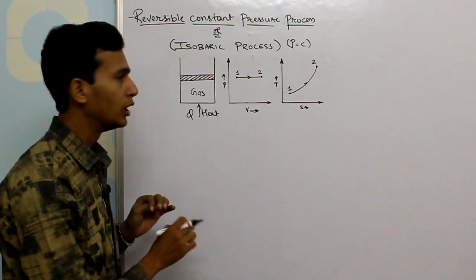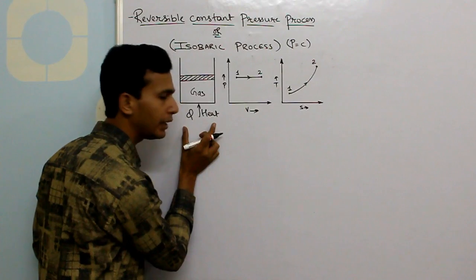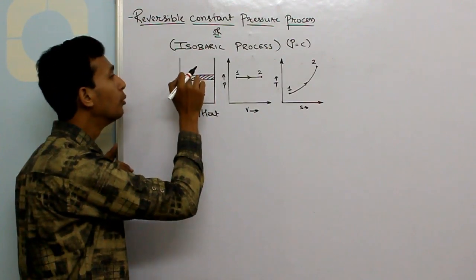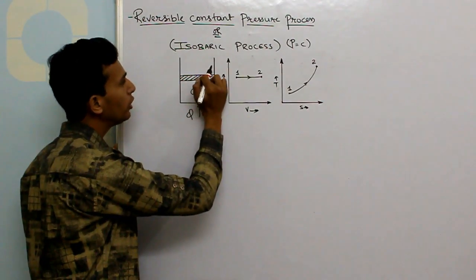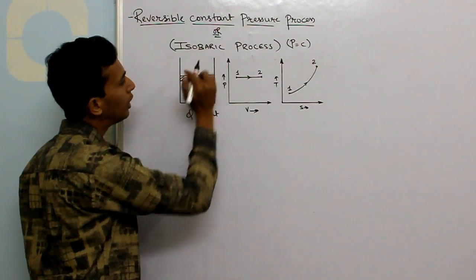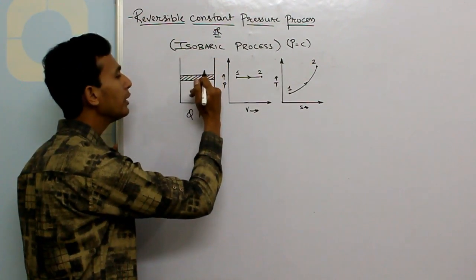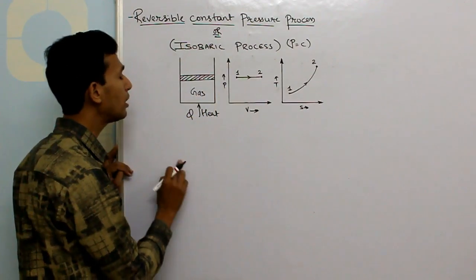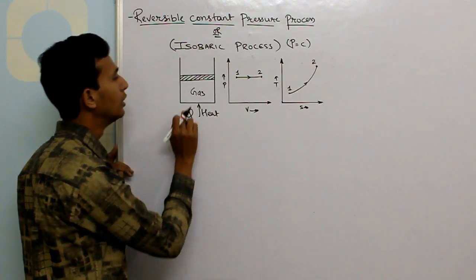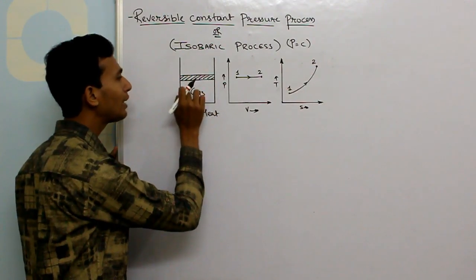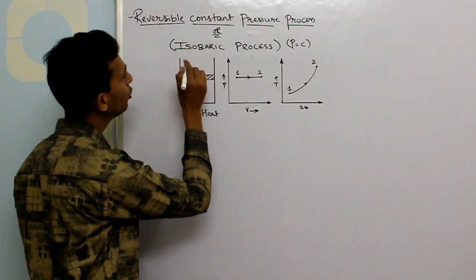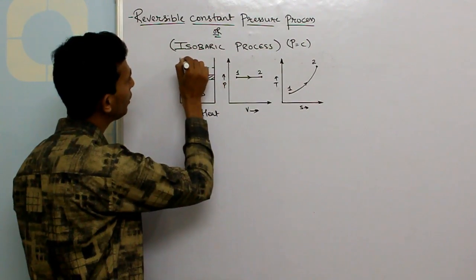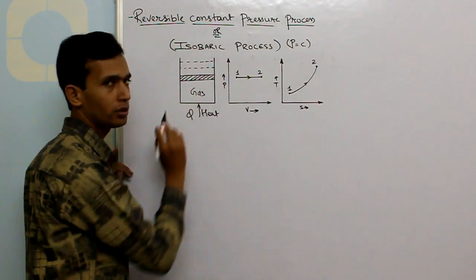The piston is stationary because the external pressure on the piston is balanced by the internal pressure of the gas onto the piston. The moment you start heating, the pressure and temperature start increasing. But as the piston is movable, it is going to shift its position to a higher value and will maintain equilibrium between the inside pressure and outside pressure. By supplying Q amount of heat, the gas has increased pressure, due to which the piston moves in the upward direction.